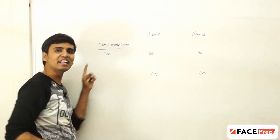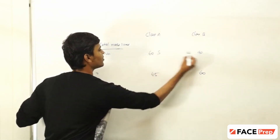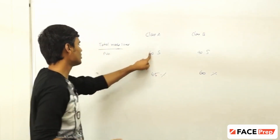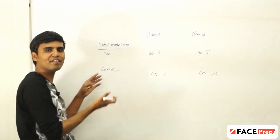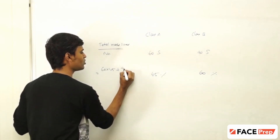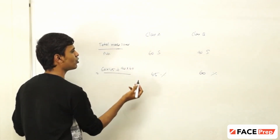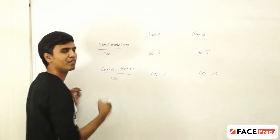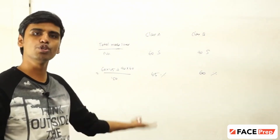You need to calculate the individual marks scored. So there are 60 students, each with an average of 45 marks, and 90 students scored 60 marks, divided by the total number of students, which is 150. So this is how weighted averages are computed usually.